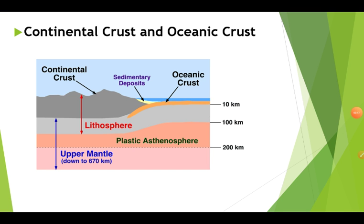Today I am going to explain you about continental crust as well as oceanic crust. You can see the picture. You can observe there are continental crust, sedimentary deposit, oceanic crust, lithosphere, plastic, and asthenosphere. I am going to explain you each of them.